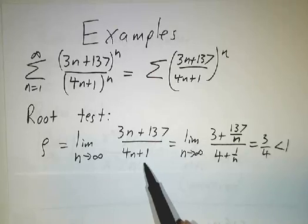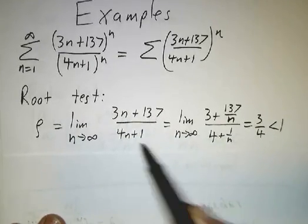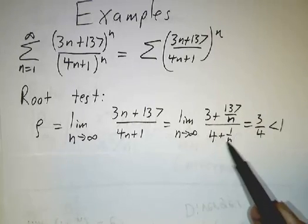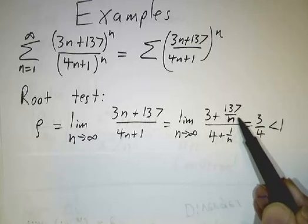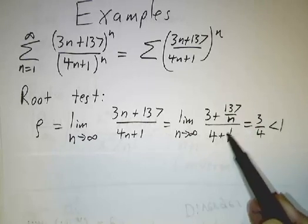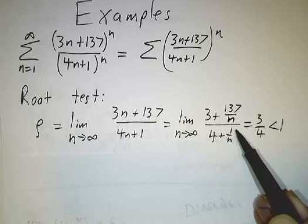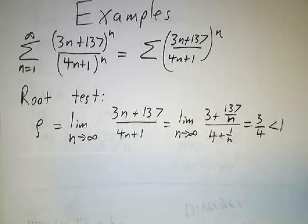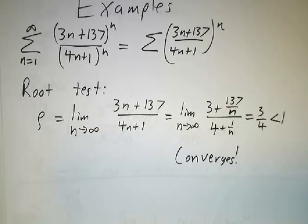How do we evaluate that limit? We divide the top and the bottom by n and we get (3 + 137/n) divided by (4 + 1/n). As n gets bigger, the 137/n and 1/n terms become less important, and in the limit you get 3 over 4. That's less than 1, so the root test tells us that this series converges.